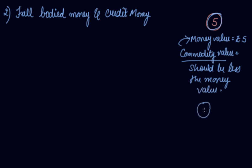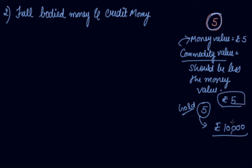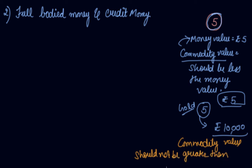If there is a gold coin with rupees 5 printed on it, the goods you can buy with it is worth rupees 5. But if you sell this gold coin in the market, you might get 10,000 rupees — that's because the commodity value exceeds the money value. So the commodity value should not be greater than the money value. The metal used to make a rupees 5 coin should have a production cost less than rupees 5.